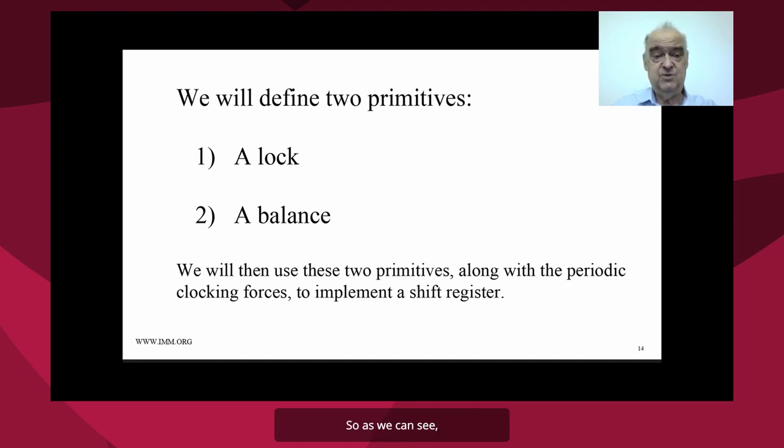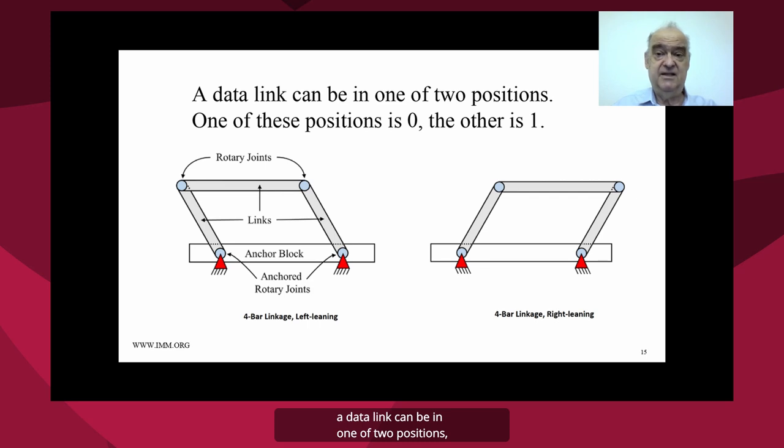So as we can see, a data link can be in one of two positions. The data link can either be in the zero position to the left or it can be in the one position to the right. And that allows us to encode zero and one. It also allows us to transport zero and one over distance. And the only thing that's involved is the movement of the links as allowed by the rotary joints.